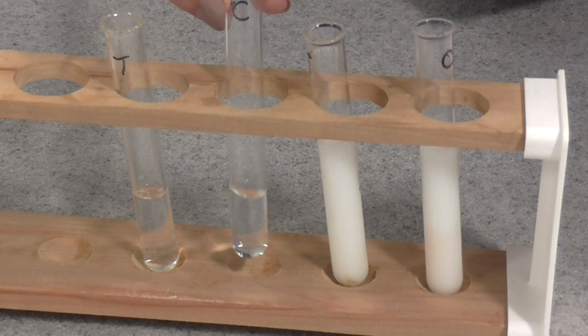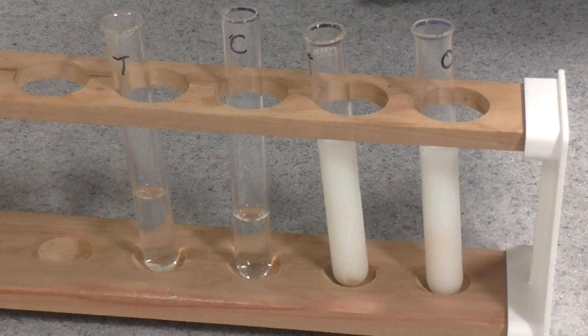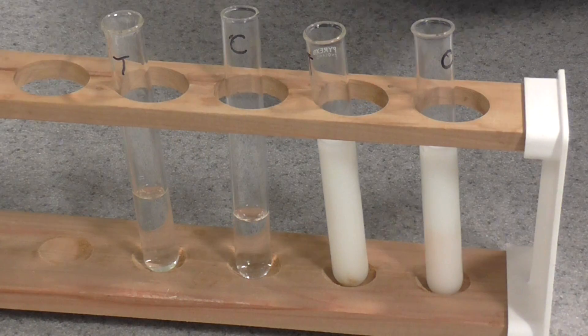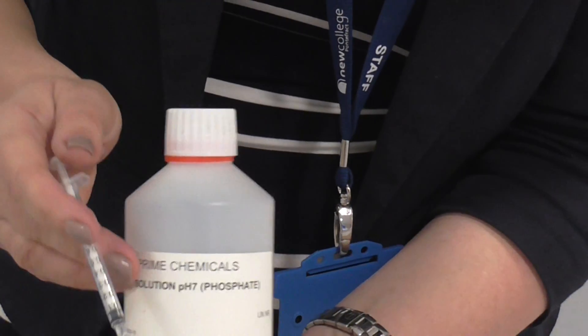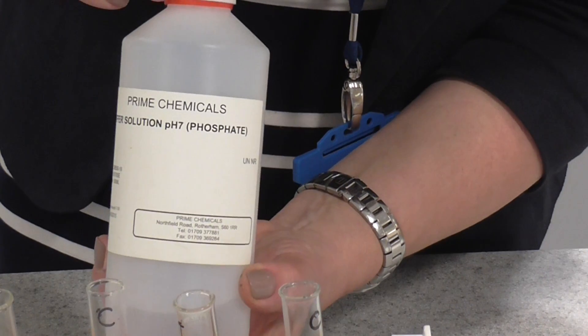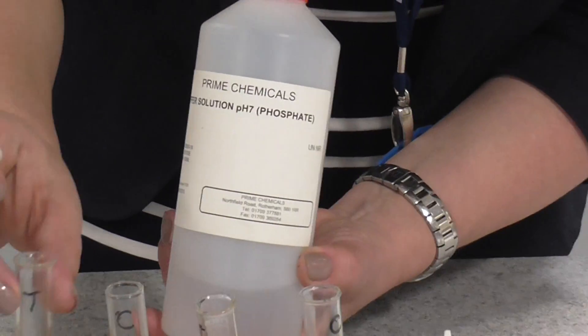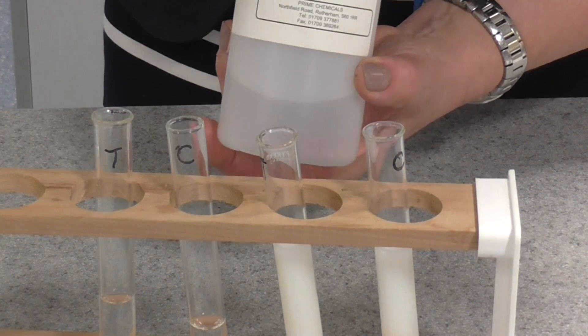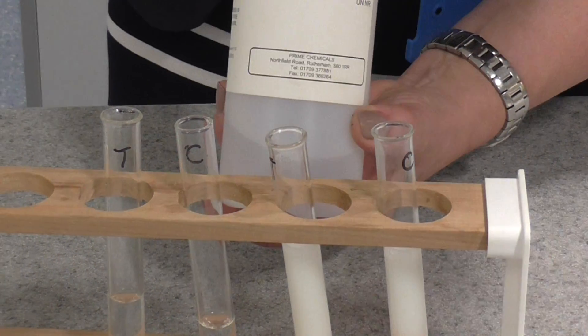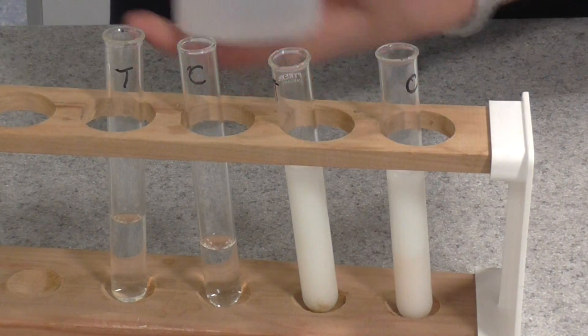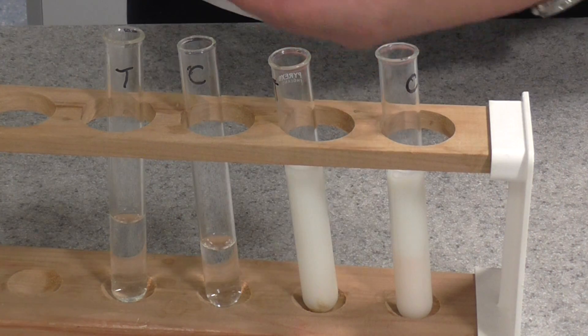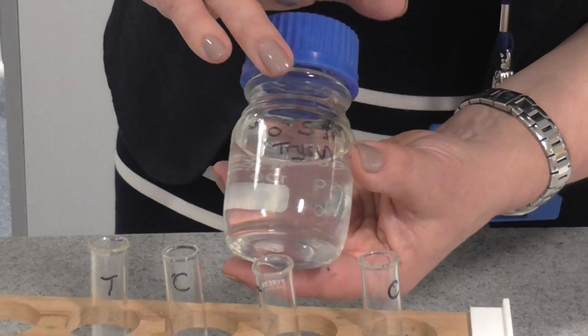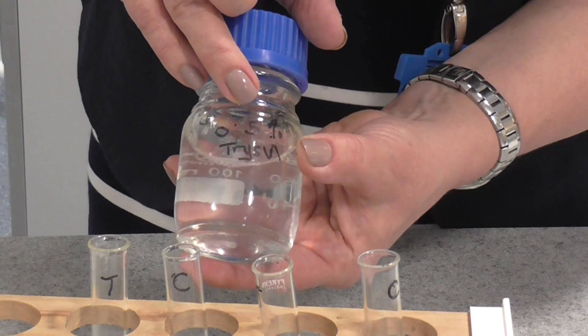In this tube here, this is for the control, I've got 4 centimetres cubed of pH 7 buffer. So, I've used a smaller syringe there. In the tube labelled T here, I've got 2 centimetres cubed of pH 7 buffer, and I've also added to it 2 centimetres cubed of 0.5% trypsin solution.